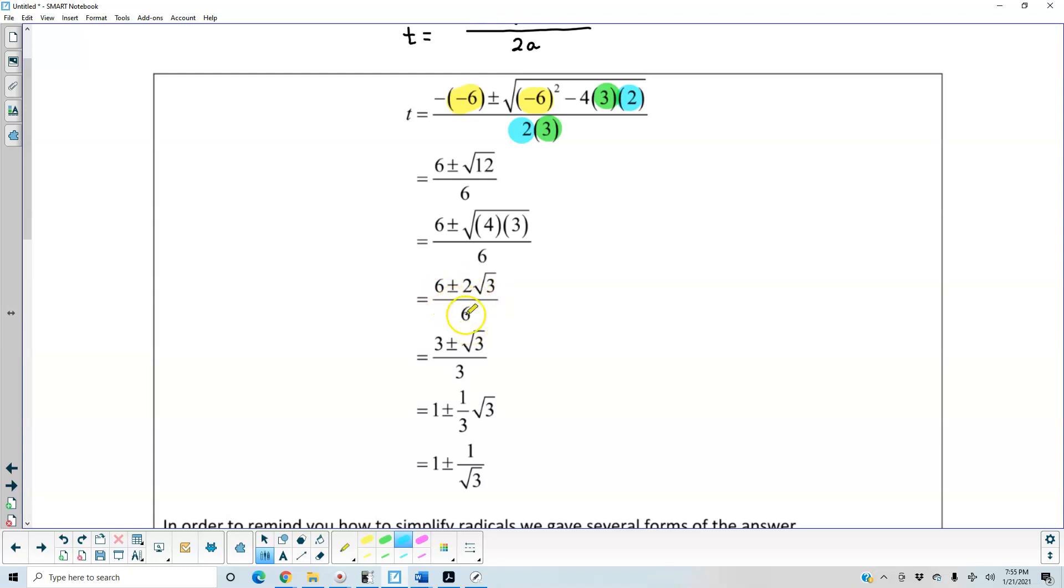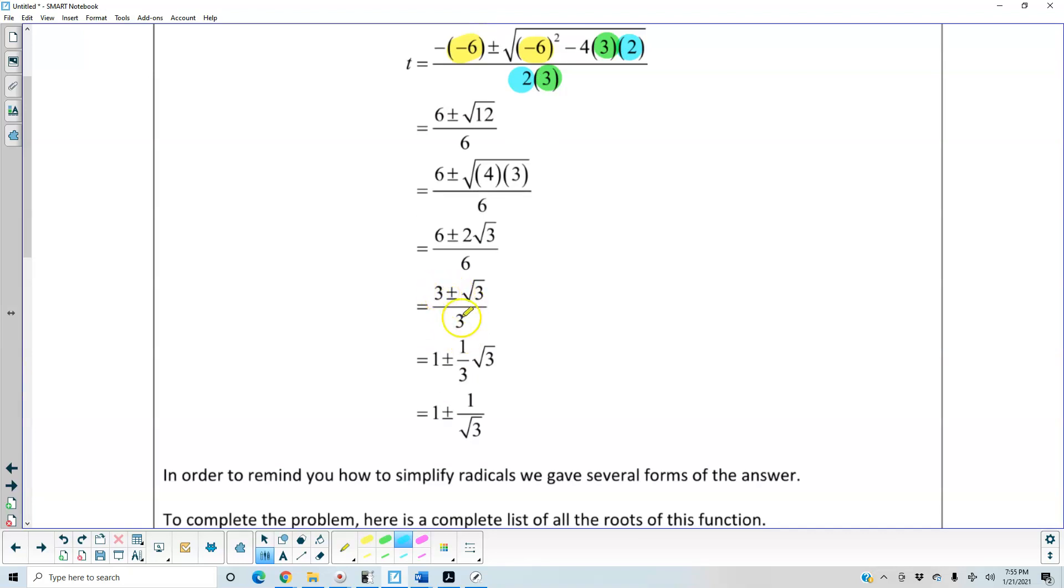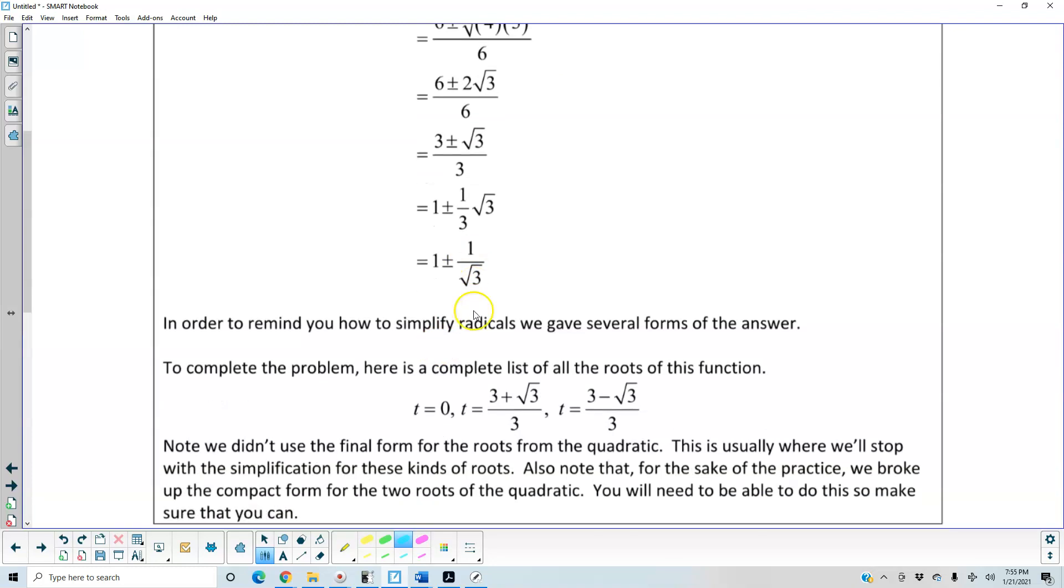So we can see that 2 goes into all of these numbers. 2 goes into 2 one time, 2 goes into 6 three times. And then we can rewrite this as 3/3, which is 1 ± (1/3)√3, which equals 1 ± 1/√3.